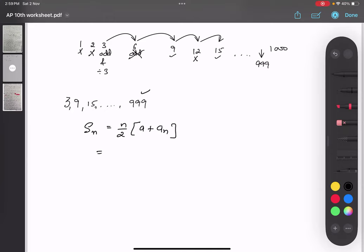Do we know the n value, number of terms? No, so we have to find it out. an = a + (n - 1)d first of all. Again, an is 999.